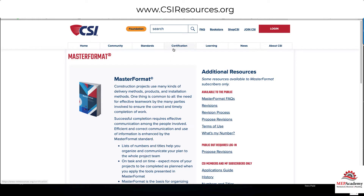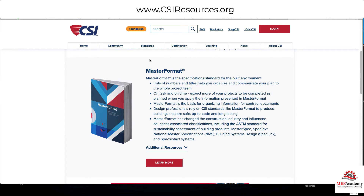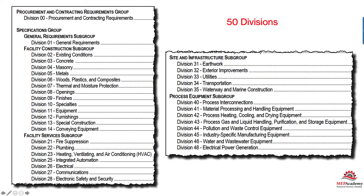First, you need to know that most construction specifications follow the CSI format, which is divided up by divisions just like chapters in a book. CSI stands for the Construction Specifications Institute. Each division covers a specific trade specialty or contract requirement. The specifications are broken down into 50 divisions. Some of them are reserved for later expansion, but you'll see Division 00 — Procurement and Contracting Requirements — which is important to read, and Division 01 — General Requirements.